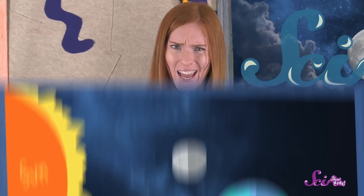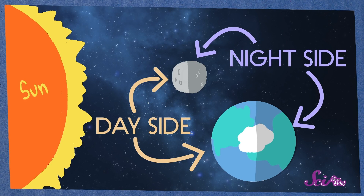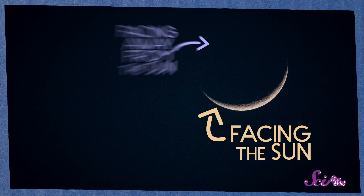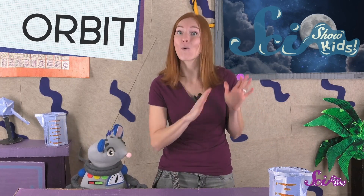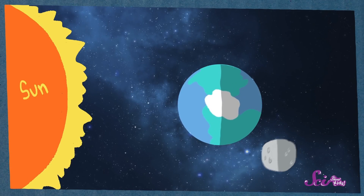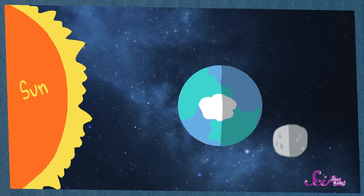Well, the Moon doesn't actually change shape, but our view of it does! The Moon, just like the Earth, has a day side and a night side — a part that's facing the Sun, and a part that's not. So when we see a little sliver of bright Moon, we're seeing a little part of the Moon that's facing the Sun, while the rest of the side that's facing us is dark. The size and shape of that sliver of lit-up Moon changes because the Moon orbits — or moves around — Earth.